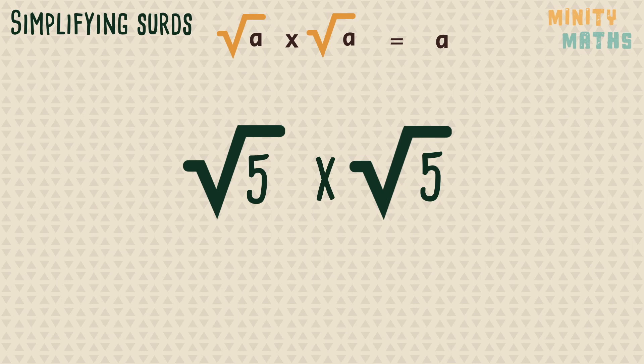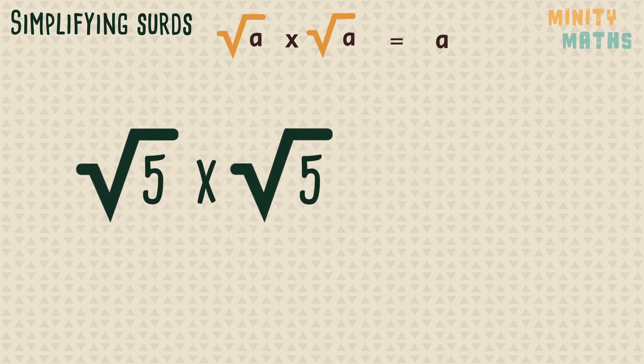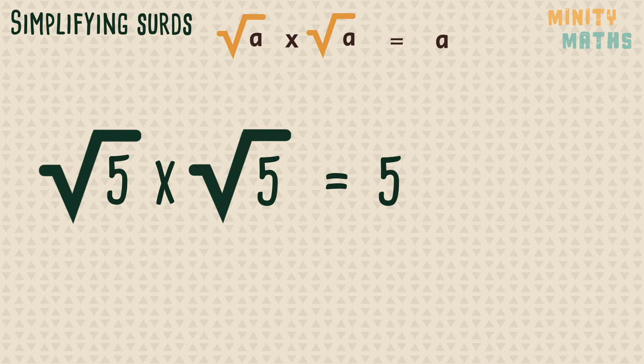For example, multiplying the square root of 5 by itself results in 5. If we look at the previous rule, we can see why this is, as the square root of 25 is 5.